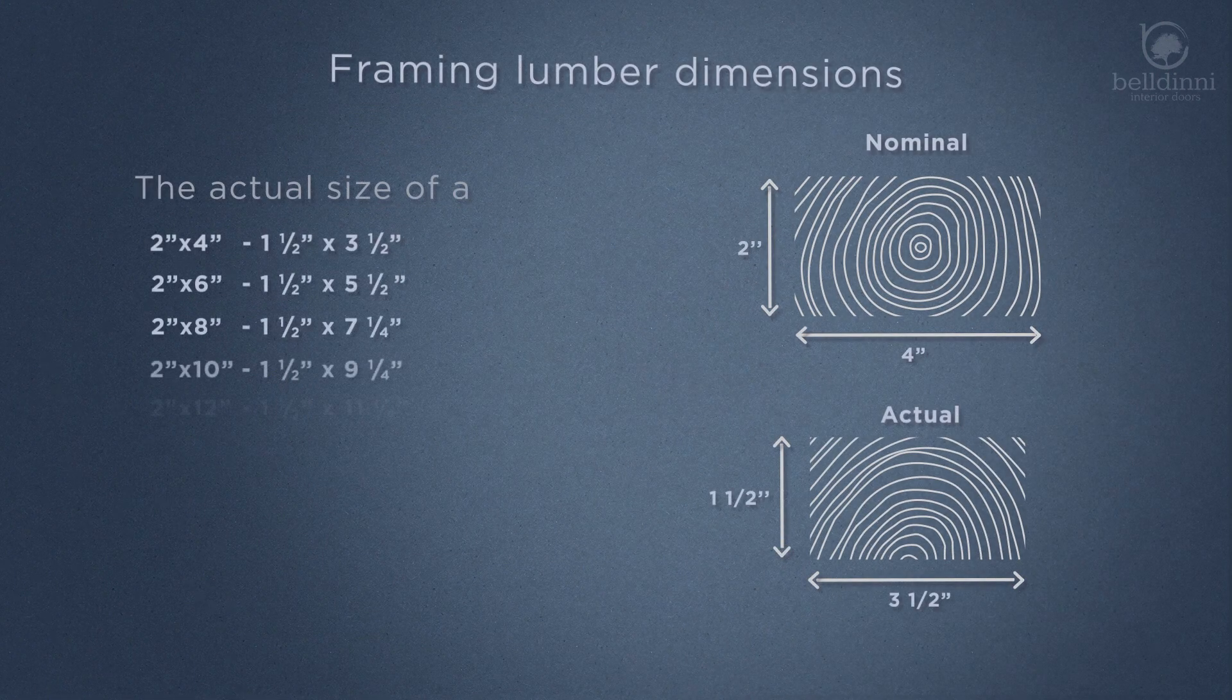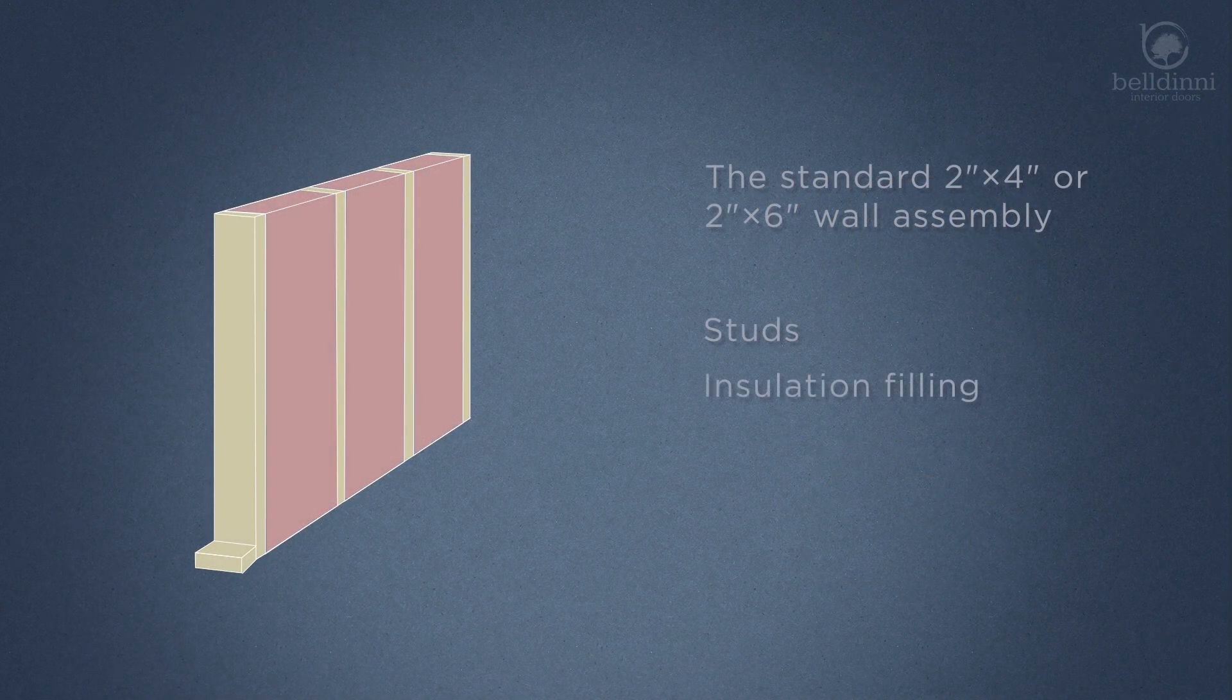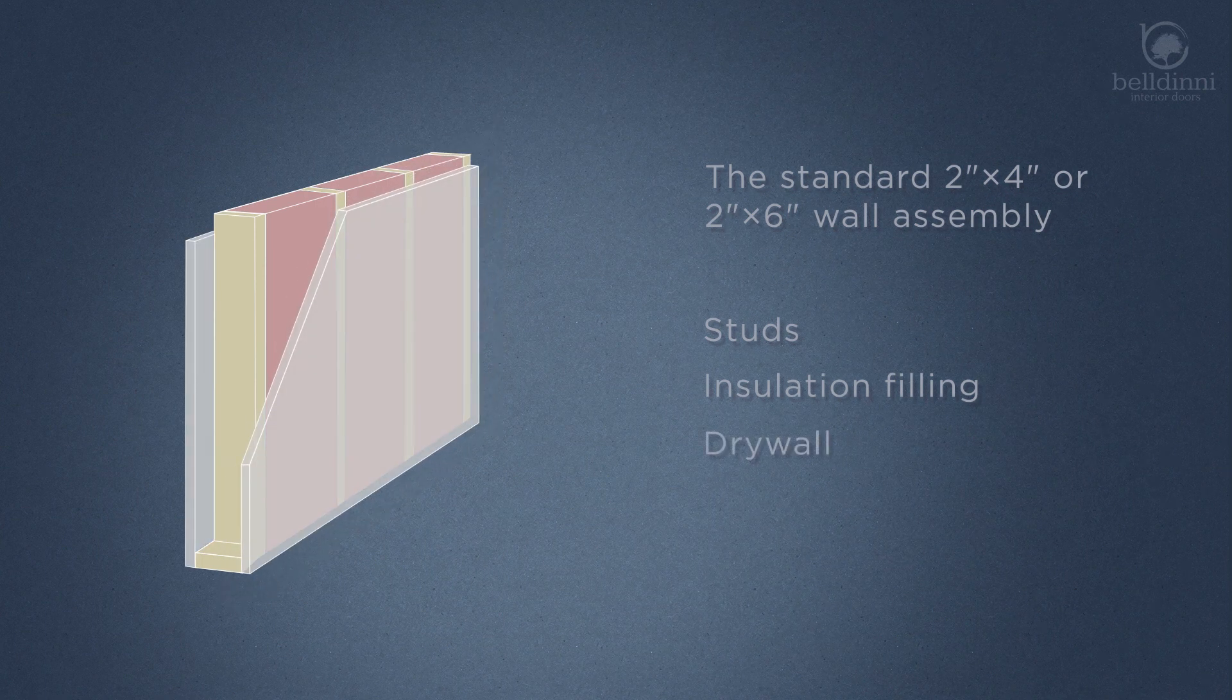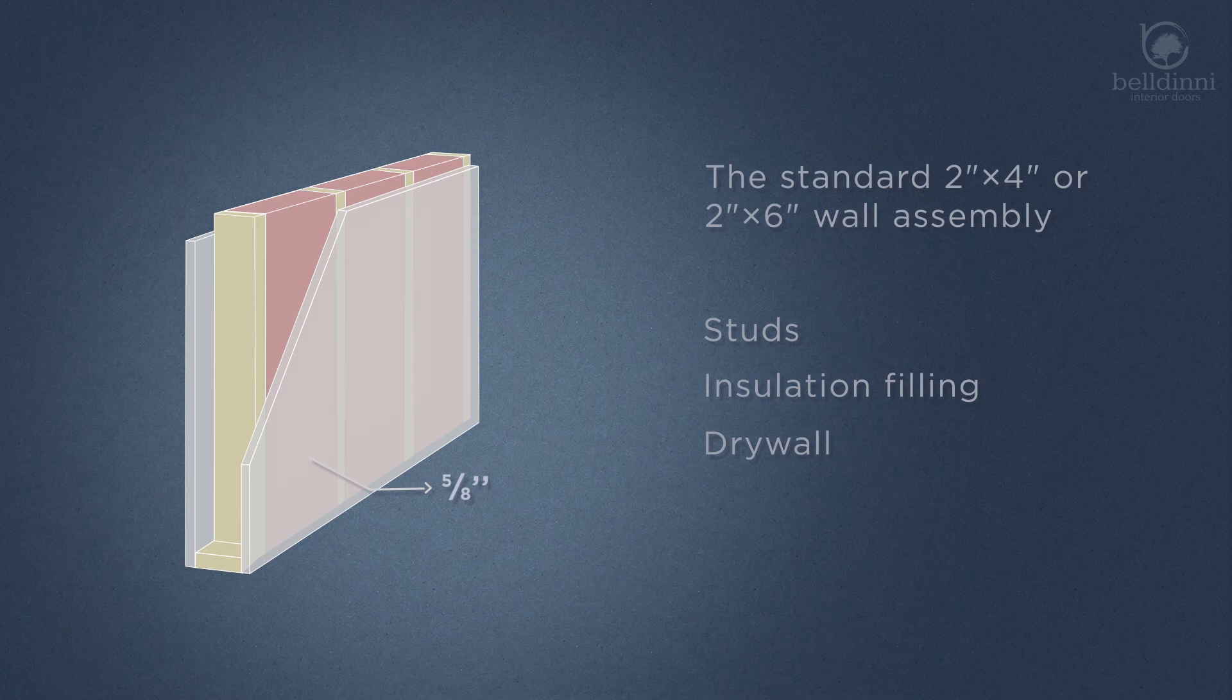The standard 2x4 or 2x6 wall assembly is as follows: Studs with insulation filling in between and a layer of drywall from both sides of the construction. Drywall is normally 5/8 inch thick. Sometimes several layers of drywall are used.